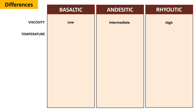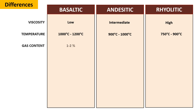Temperature: Basaltic magma has the highest temperature, ranging from 1,000 degrees Celsius to 1,200 degrees Celsius. Rhyolitic magma has the lowest temperature, ranging from 750 degrees Celsius to 900 degrees Celsius. Gas content: Basaltic magma contains the lowest gas content, ranging from 1 to 2%. Andesitic magma has moderate gas content, typically around 3 to 4%.